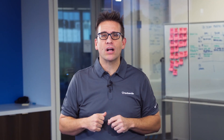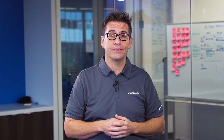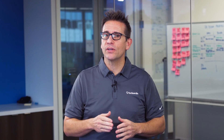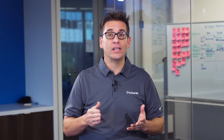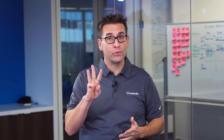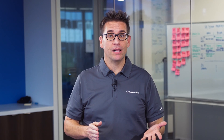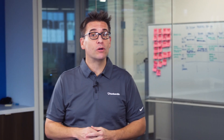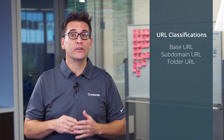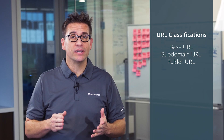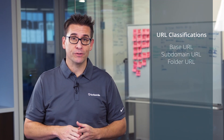How does GoGuardian Teacher know what parts of a website to block? Can you block just part of a website? GoGuardian Teacher classifies the URLs that you tell it to block or allow in one of three ways: a base URL, a URL with a subdomain, or a URL with a directory folder. Entering each of these will change the block or allow behavior.